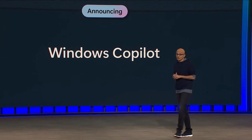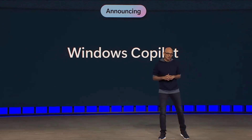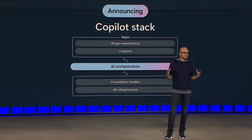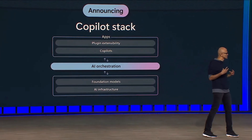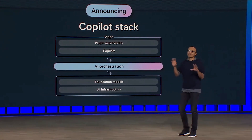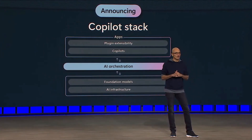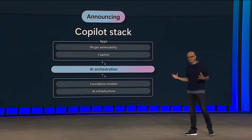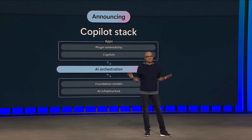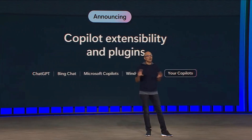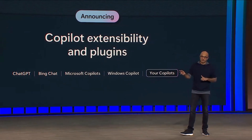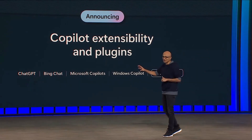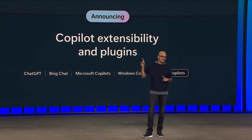We're also very excited to launch the Copilot Stack. After all, we've built all these Copilots with one common architectural stack. We want to make that available so that everyone here can build their own Copilot for their applications. We're also going to have common extensibility across all of these surfaces — whether it is ChatGPT, Bing Chat, Microsoft 365 Copilot, or all of the Microsoft Copilots — and your own Copilots. We can share the same extensibility model.